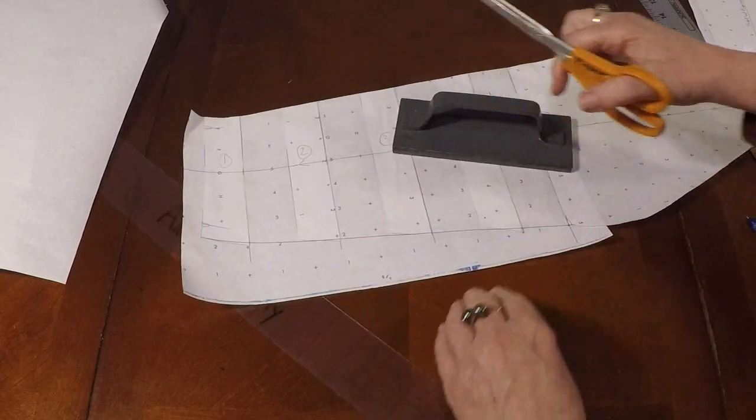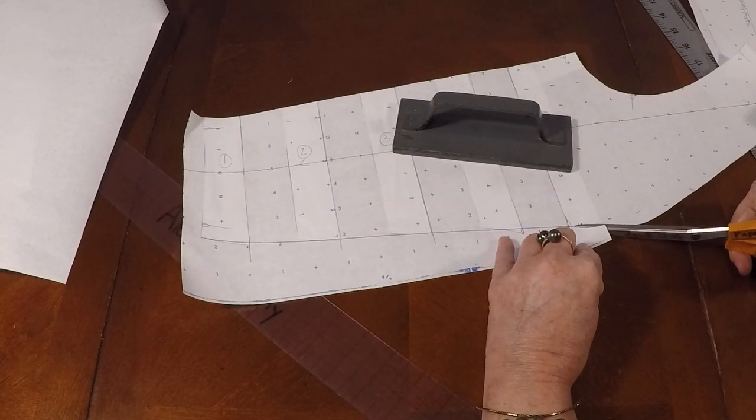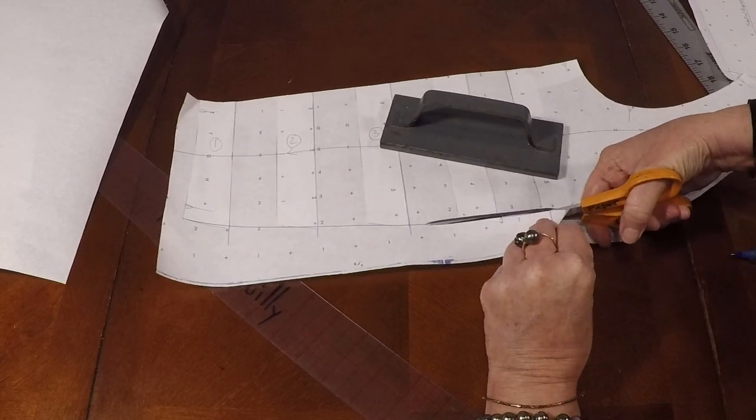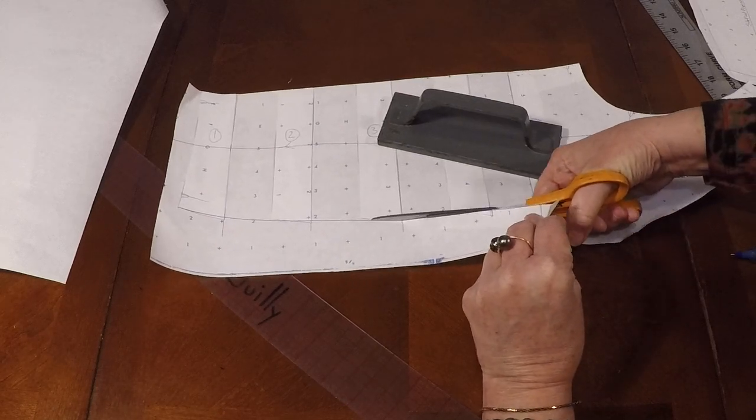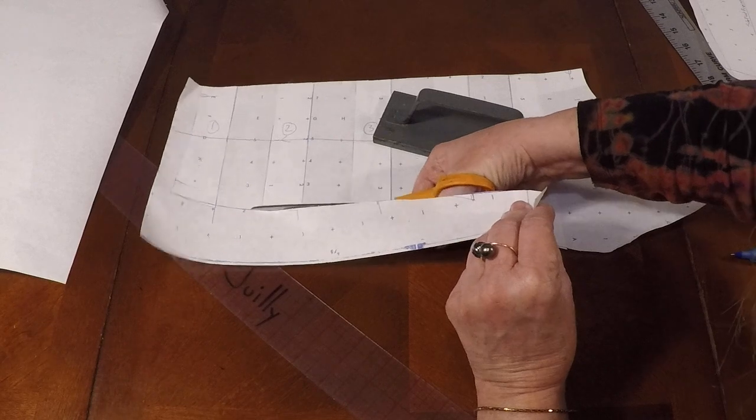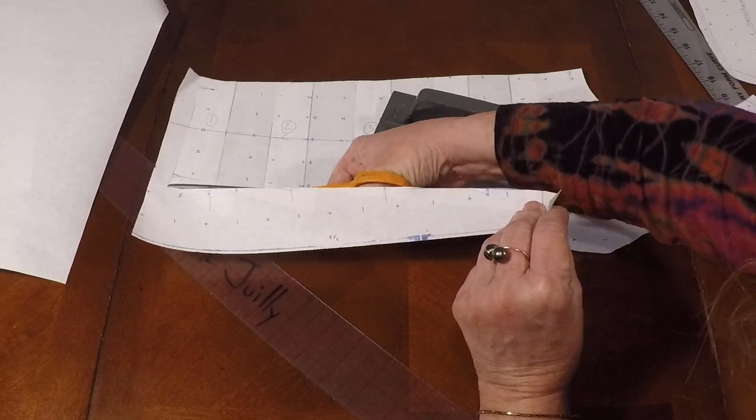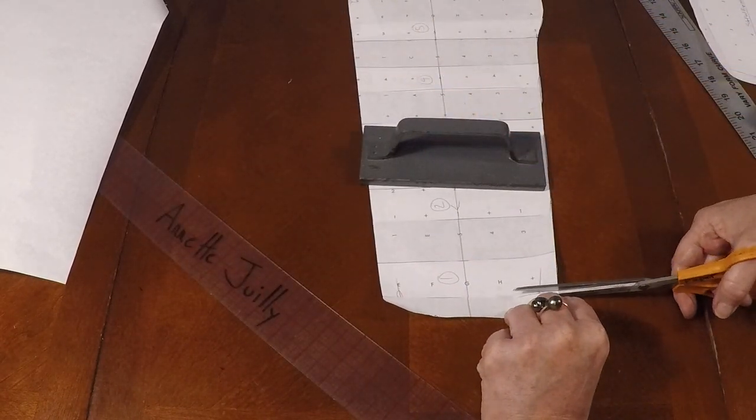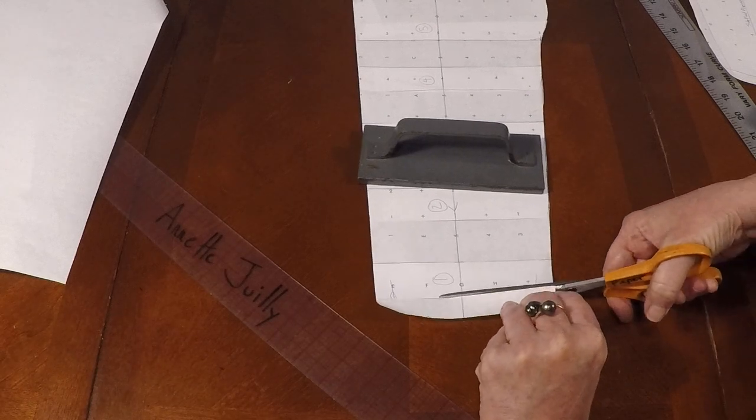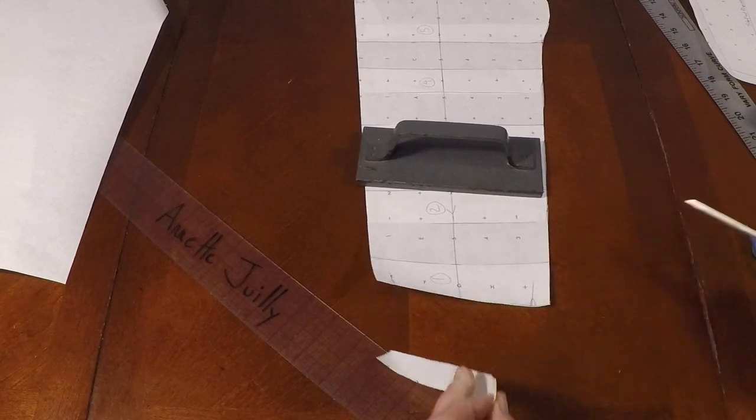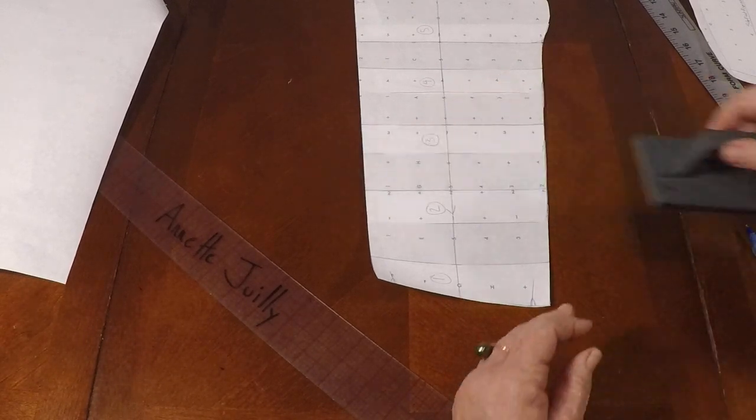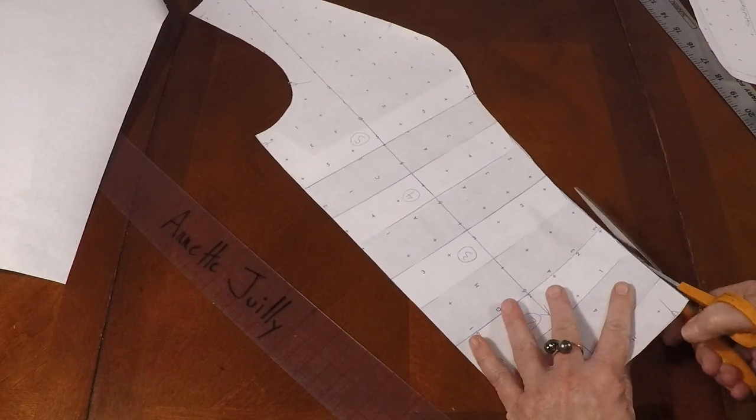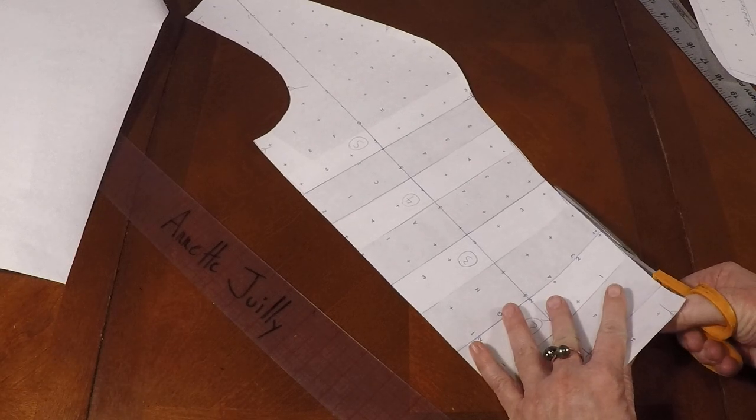Now we're going to go ahead and cut out the princess seam. That was our side seam, and this is contoured a little bit. It curves in. And that's what our bodice, our princess seam, looks like with the added fullness. This is a side front princess seam.